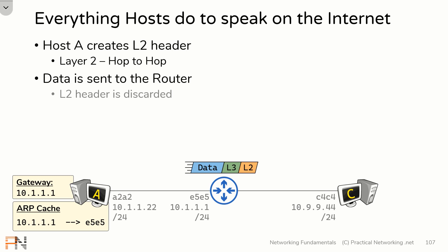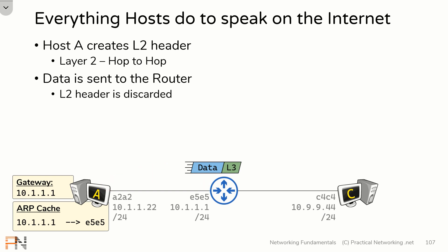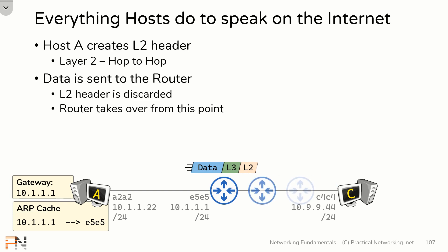Now that data can finally be sent across the wire, where it will be received by the router. Upon receiving this, the router is going to discard the layer 2 header — the whole purpose of that header was to get this packet from host A's NIC to the router's NIC, which it did successfully. At this point the router is going to take over, adding layer 2 headers as necessary to get the packet across the next hop, whether that hop is directly to host C or across multiple routers on the internet. From host A's perspective, the job is done — it did everything it needed to do to get the data to the router.